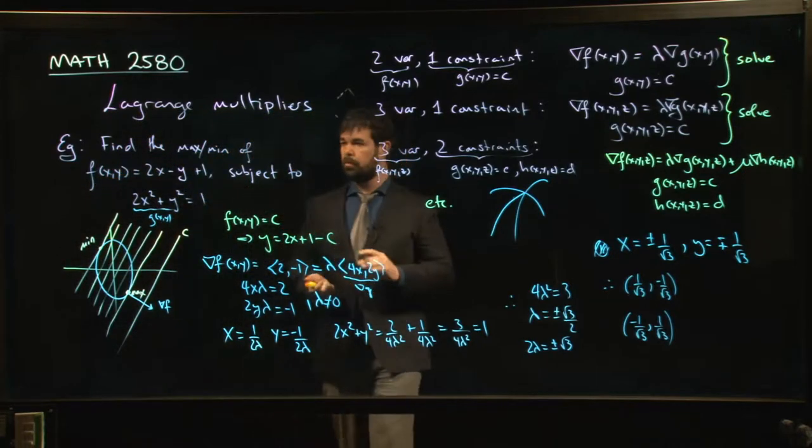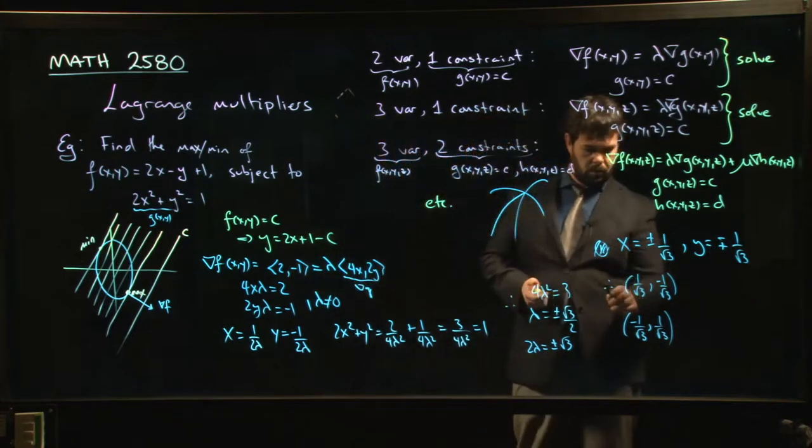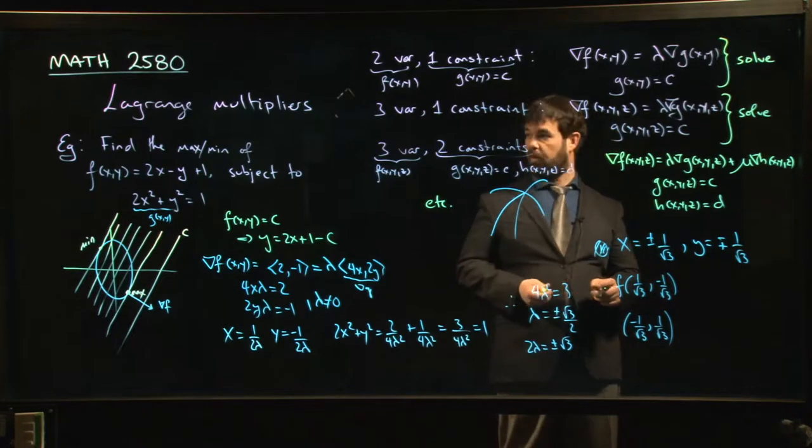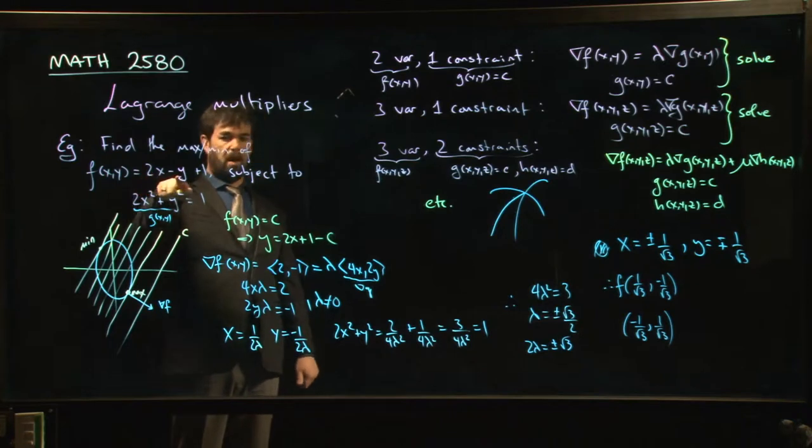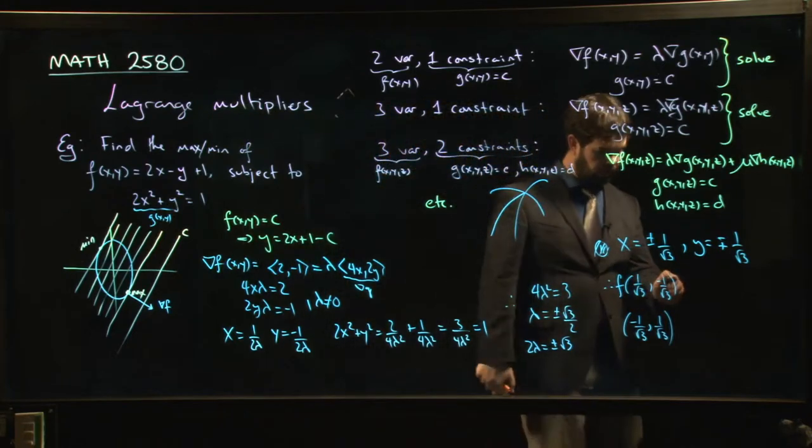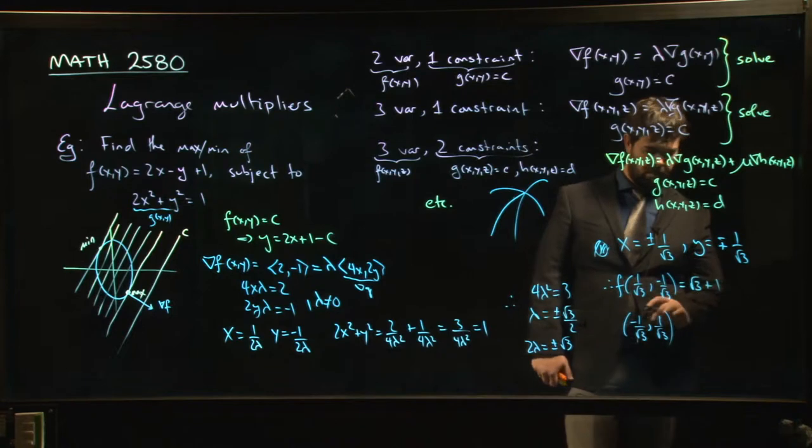If we want to confirm, we can plug them back into our function. f at 1 over root 3, minus 1 over root 3. What's that going to be? It's going to be 2 over root 3 minus minus 1 over root 3. So 3 over root 3, which is, if I simplify, root 3 plus 1. That's going to be the max.